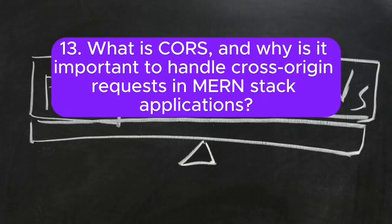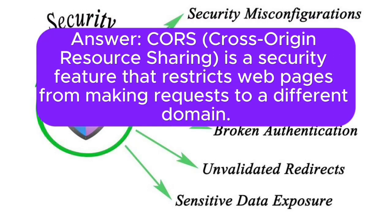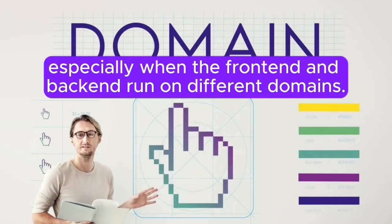13. What is CORS and why is it important to handle cross-origin requests in MERN stack applications? Answer: CORS (cross-origin resource sharing) is a security feature that restricts web pages from making requests to a different domain. In MERN applications, you need to handle CORS to enable cross-origin requests, especially when the front-end and back-end run on different domains.